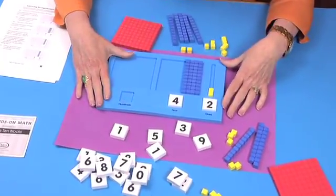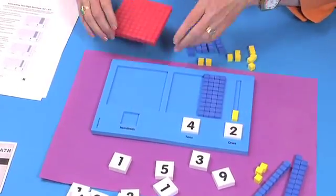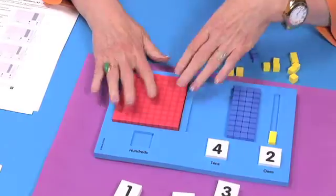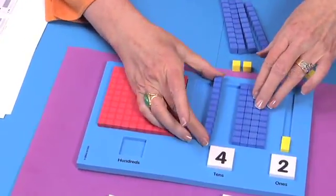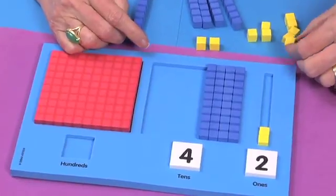Hi, I'm Sandy Genovese and we're going to talk about the base 10 place value frame. You can see that I have it sitting here. It's divided into ones, tens, and hundreds. And there are the manipulatives that represent hundreds, there are rods that represent the tens, and then there are individual units that represent the ones.